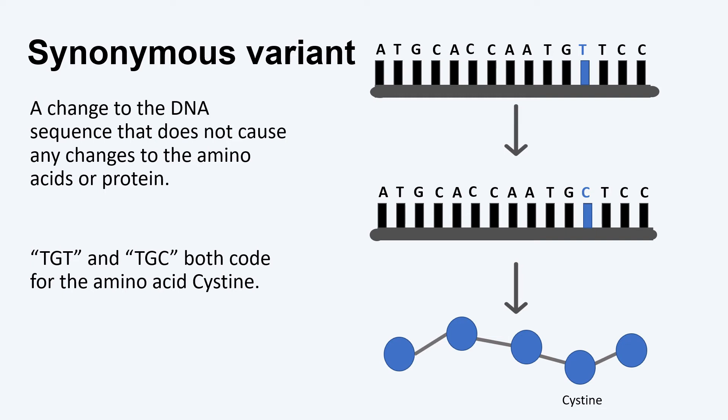In this example, the group of letters TGT and TGC both code for the same amino acid, cysteine.